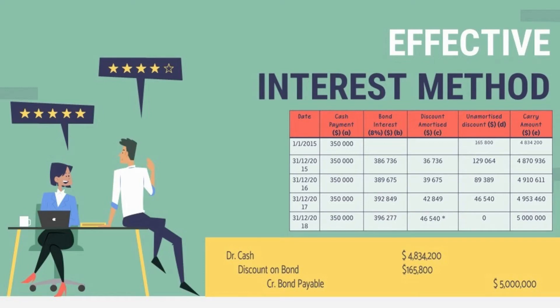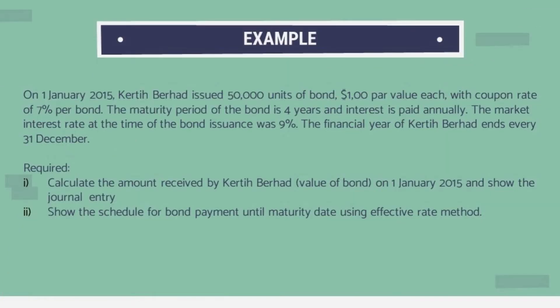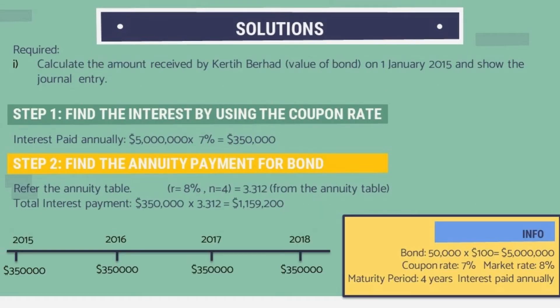Today I will explain how to calculate amortization using the effective interest method. We will go straight to the question. The question states that on the 1st January, Kertai Burhat issued 50,000 units of bonds with a $100 par value. The coupon rate is 7%, the market rate is 9%, the maturity is 4 years, and interest is paid annually. We are required to calculate the amount received by Kertai Burhat on 1st January and show the bond payment schedule until maturity using the effective rate method.